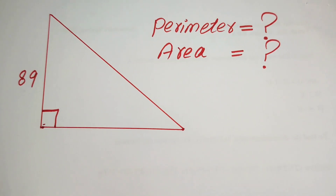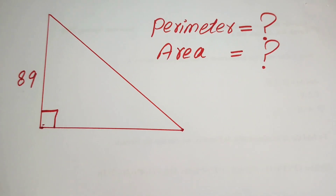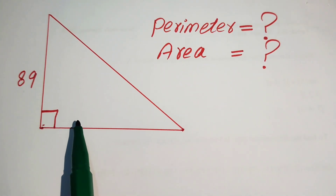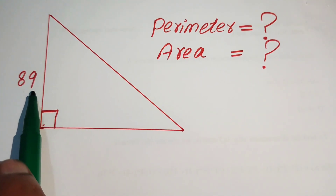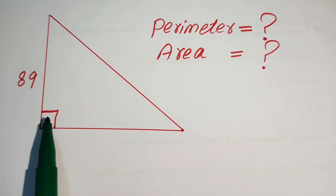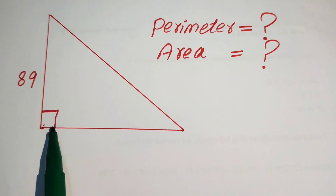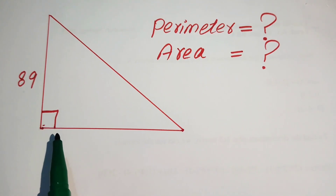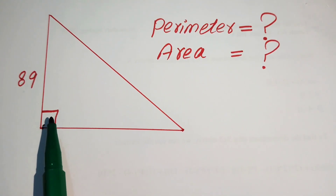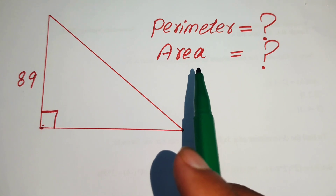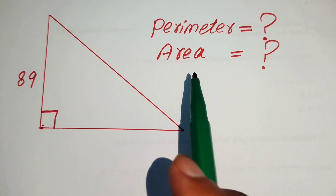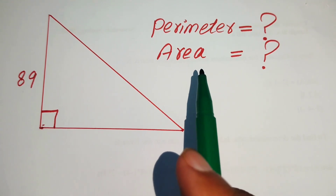Hello everyone, welcome. We are going to solve this Math Olympiad geometry problem. We have a nice right triangle in which the length of one side is 89 and one angle is a right angle. Using this information, we will find the perimeter and area of this right triangle.